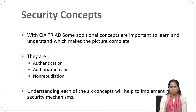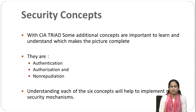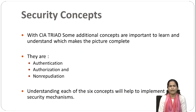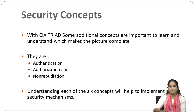Which are those three concepts? Those three concepts are authentication, authorization, and non-repudiation. When we talk about these three concepts combined with the CIA triad concepts, we have a total of six concepts which we need to understand for any security system. Understanding each of the six concepts will help to implement a robust security mechanism.